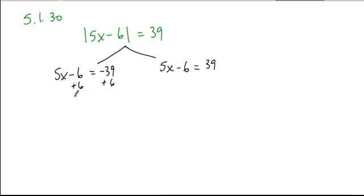So if we add 6 to both sides, here we get 5x equals negative 33. Divide by 5, and one of our solutions is negative 33 fifths. And the other equation, we add 6 to both sides to